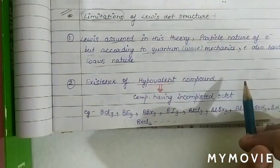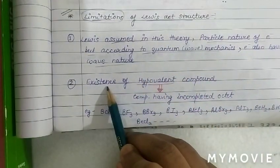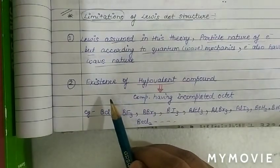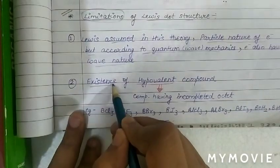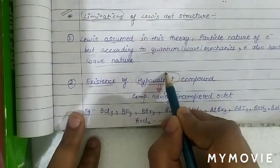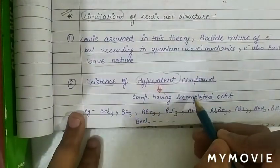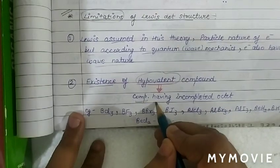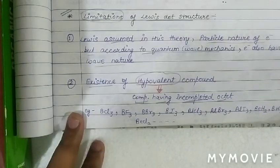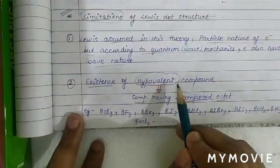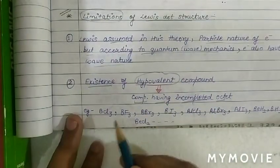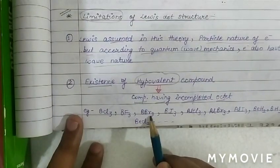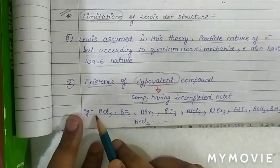The second drawback of Lewis theory is that every atom tries to complete its octet, except hydrogen which completes its duplet. However, there exist some hypovalent compounds — compounds having an incomplete octet — such as BCl3, BF3, BBr3, and BI3, whose existence is not explained in Lewis theory.